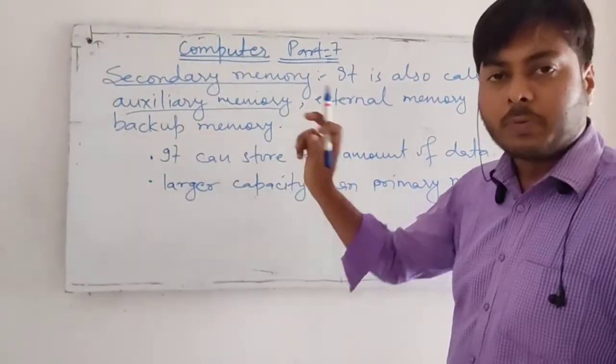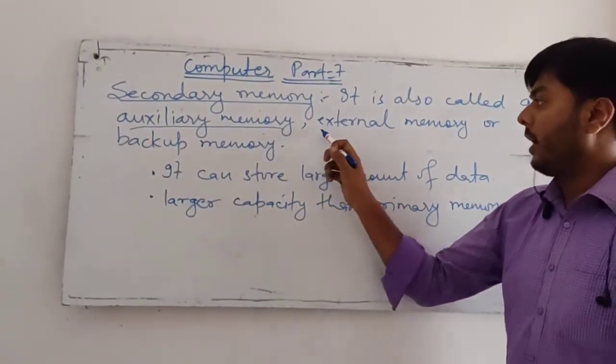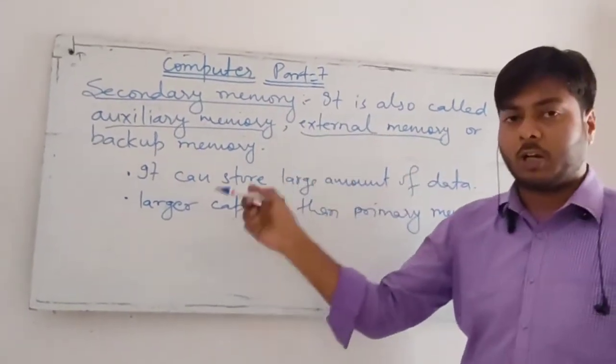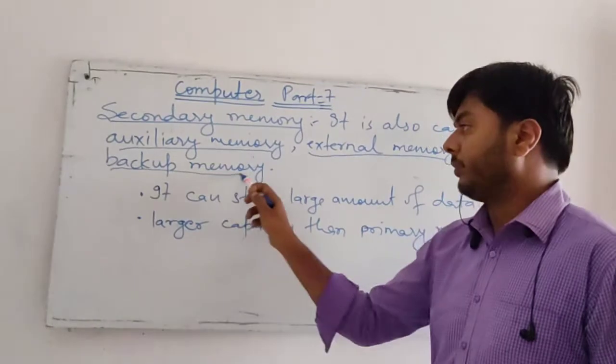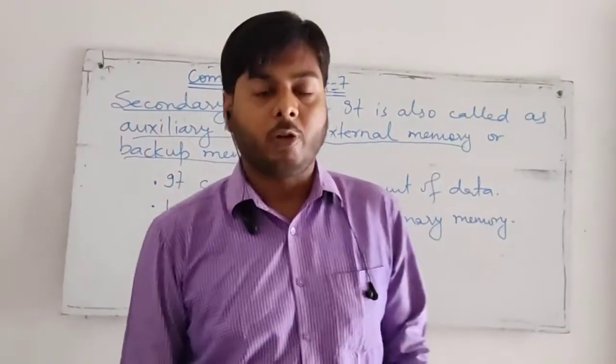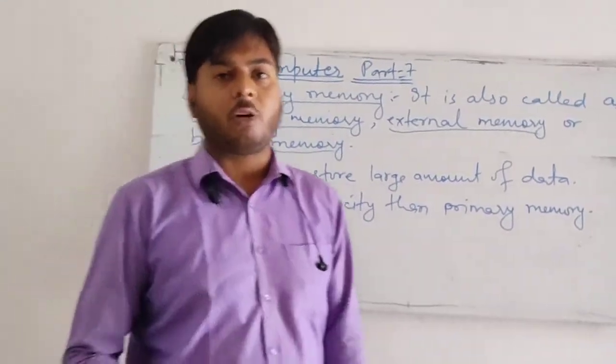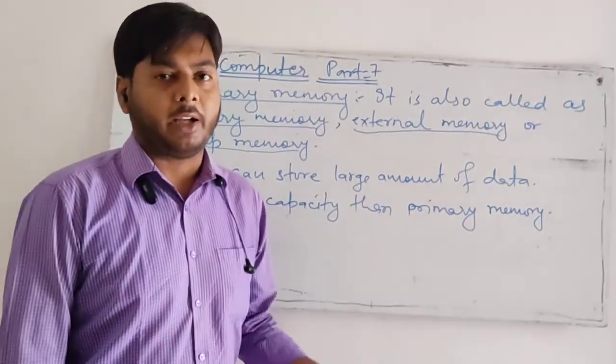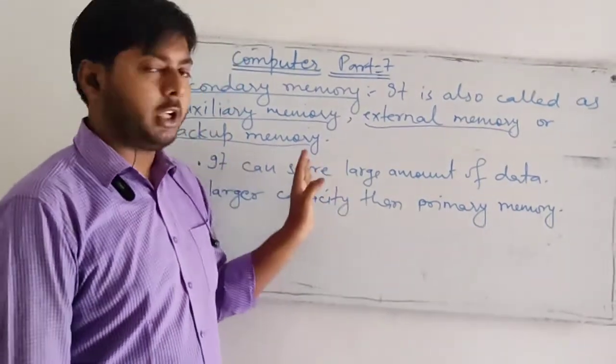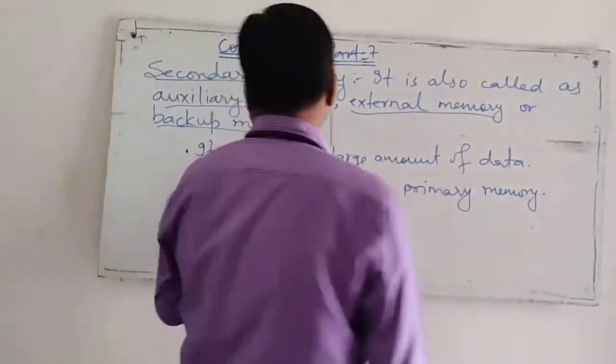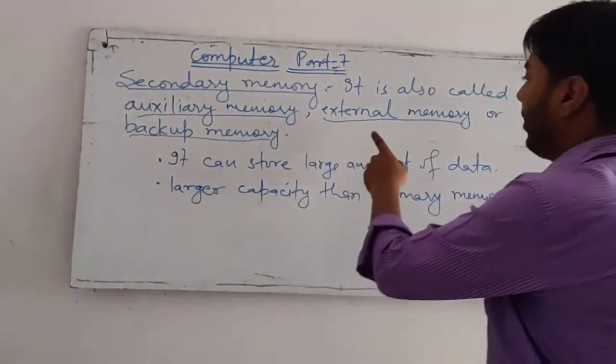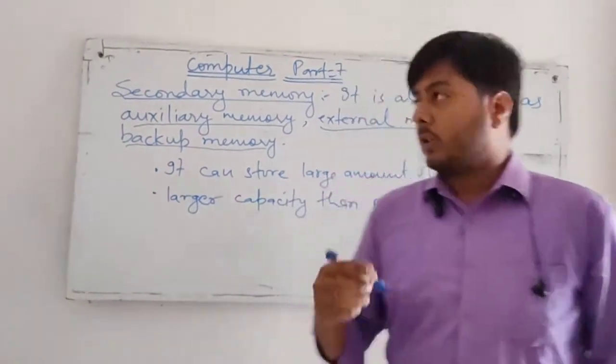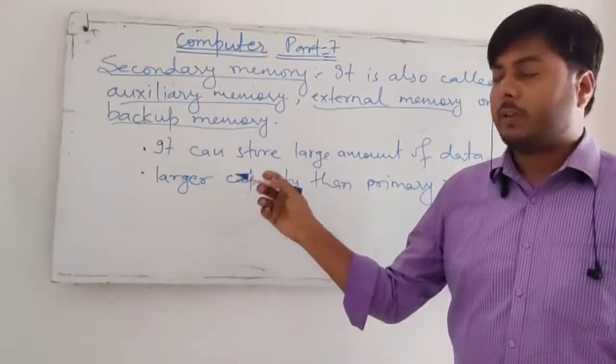The another name of secondary memory is auxiliary memory. Another name is external memory, that means it is used externally. Also backup memory, that means if you want to format your laptop or mobile phone, you should keep your data in the pen drive or hard disk. So there are three names of secondary memory: auxiliary memory, external memory, and backup memory.